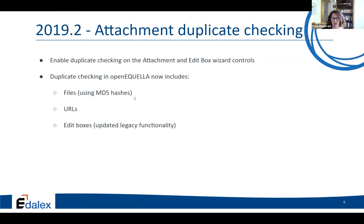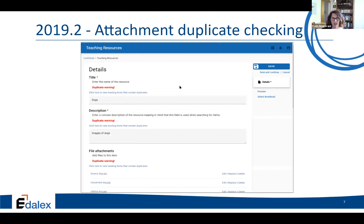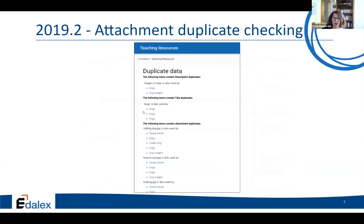It now includes files using MD5 hashes, URLs, and edit boxes. Edit boxes now give a duplicate warning straight away if you type in something that exists in another item within the same collection. The same with uploading file attachments — it will tell you straight away, with a link to click to have a look at the details. It tells us if the description, title, and attachments are the same.